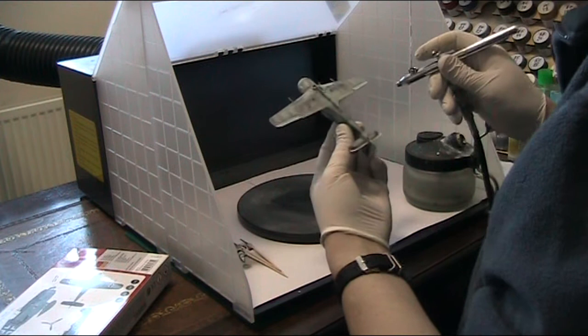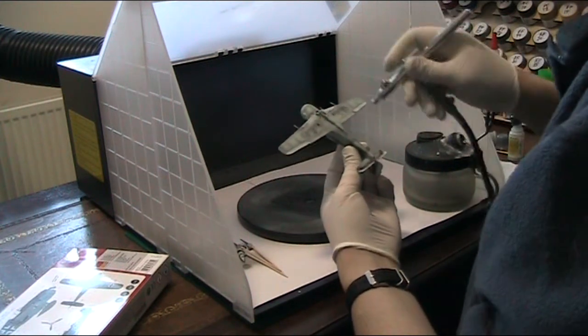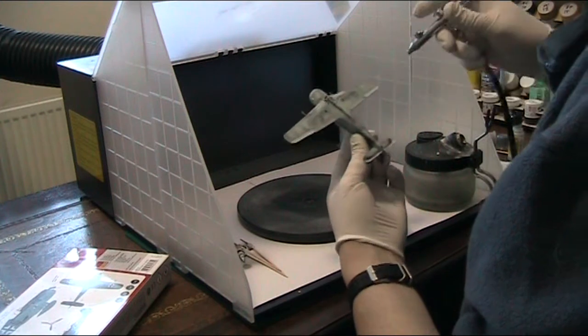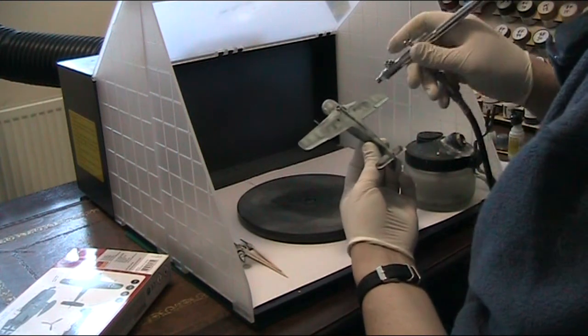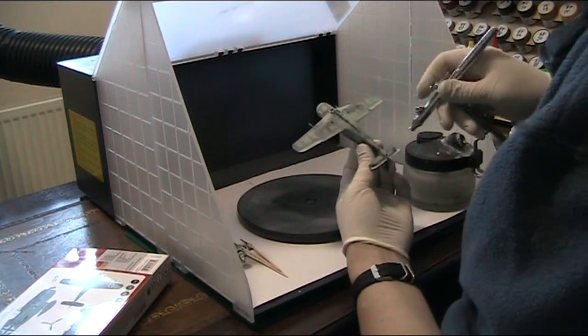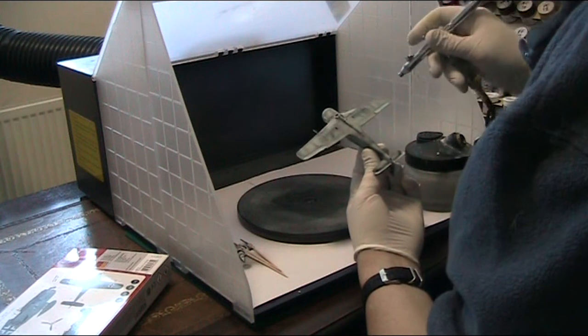Now the trick with pre-shading is to try to put the layer of paint on and just do it thinly, brushing it over in very thin layers. What should then happen is as it starts to go down, you back off and move somewhere else.